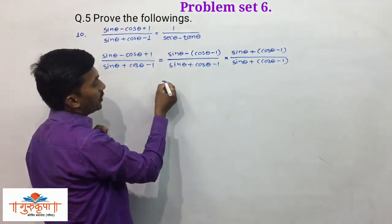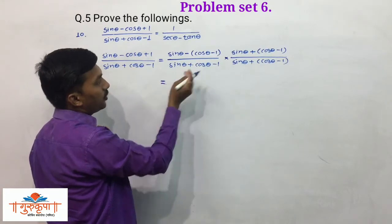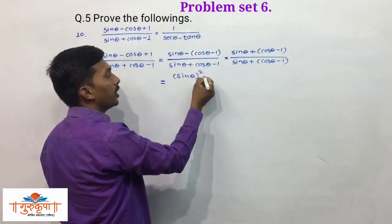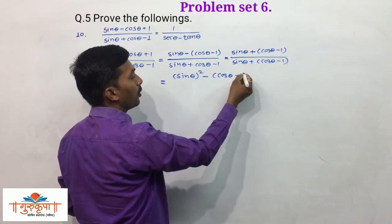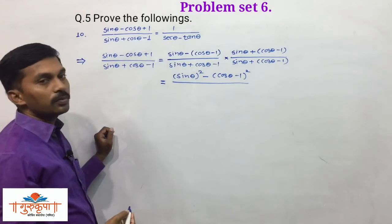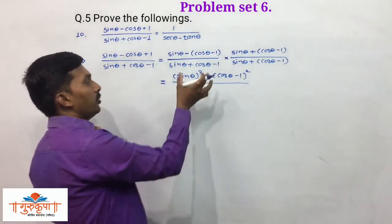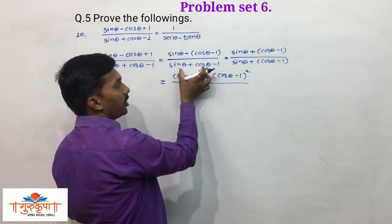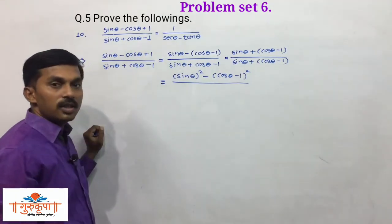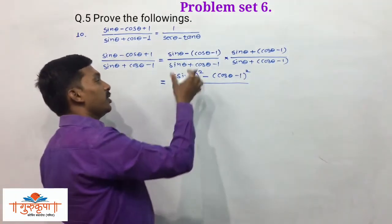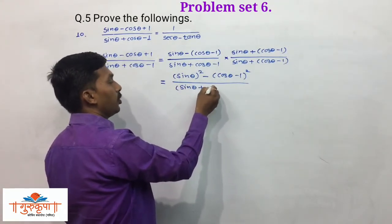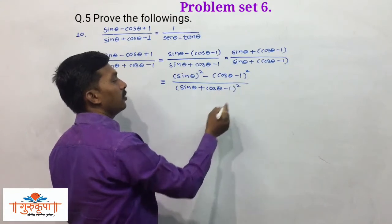In the numerator it is in the form (a + b)(a - b), so we write it as a² - b². In the denominator we have to take the square expansion: the same trigonometric expression (sinθ + cosθ - 1) multiplied by itself, giving (sinθ + cosθ - 1)².